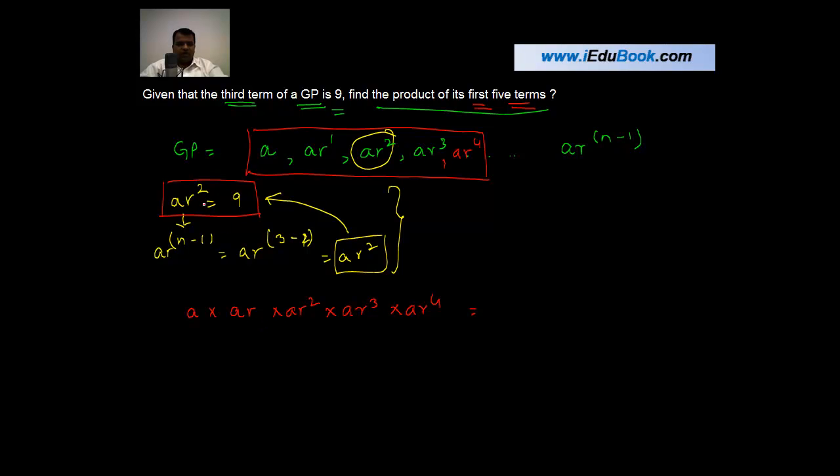Now whenever you are given something like this, the first step that you should see is: can I find out the value of A and R? In this case, unfortunately you can't, because the only information provided is this. There are two variables and one equation, so we can't solve it.